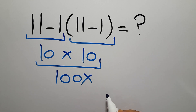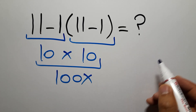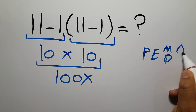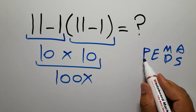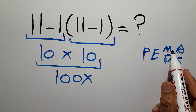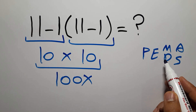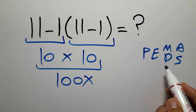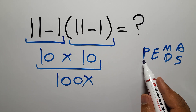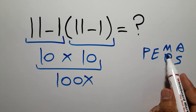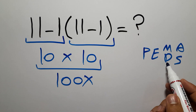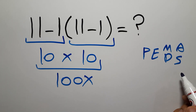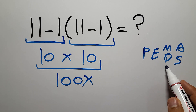According to the order of operations, which is PEMDAS: P stands for parentheses, E stands for exponents, M and D stand for multiplication and division, and A and S stand for addition and subtraction.